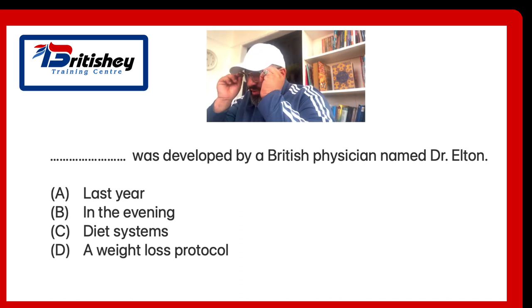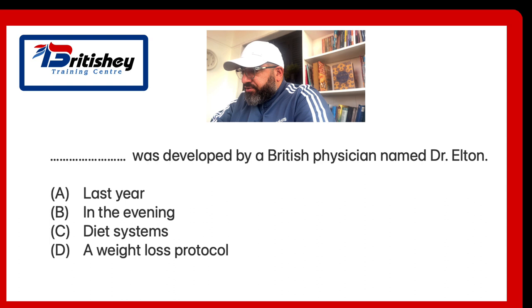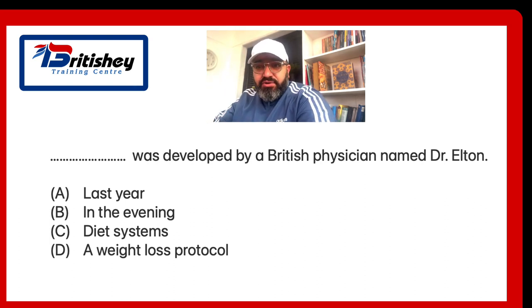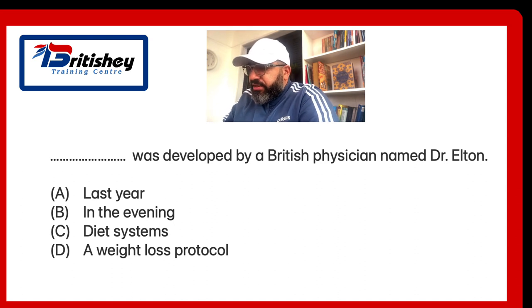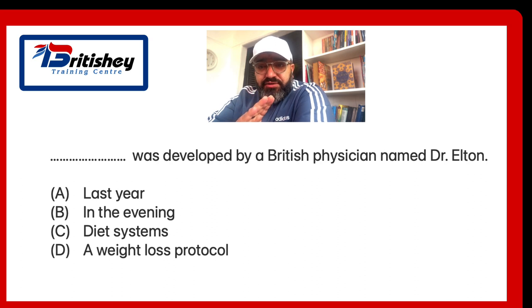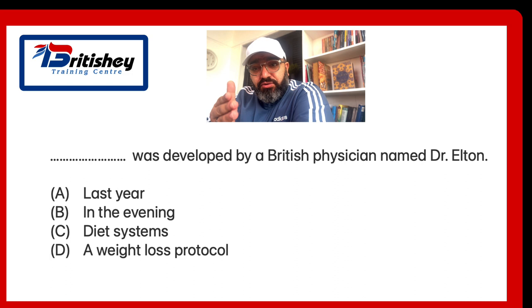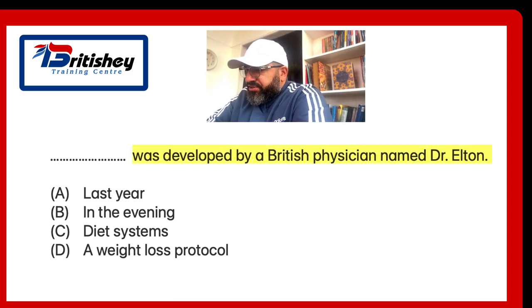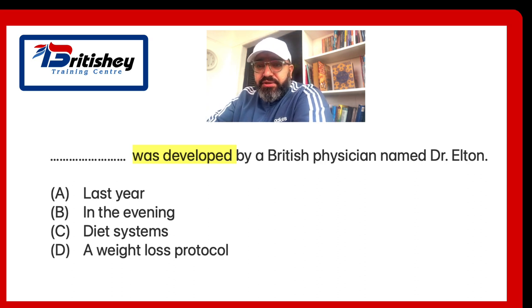Let's go to the first question. It's an MCQ — multiple choice question — and it says: 'was developed by a British physician named Dr. Elton.' We have four options: A) last year, B) in the evening, C) diet systems, and D) a weight loss protocol. The first question you need to ask yourself is: do I have a subject or a verb in this sentence? Looking at 'was developed,' that's clearly a verb, so we need to find a subject.